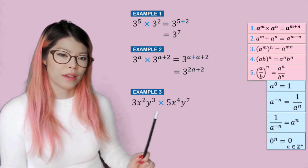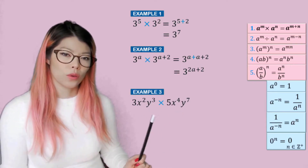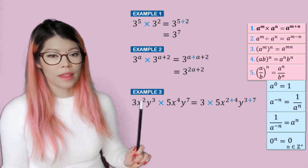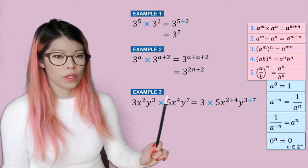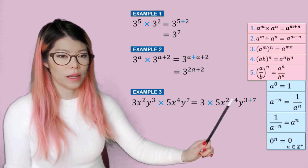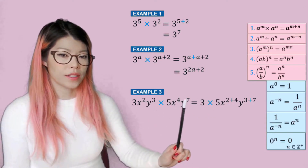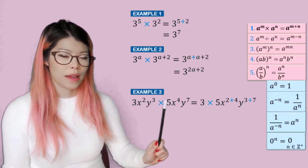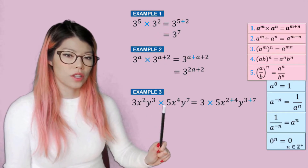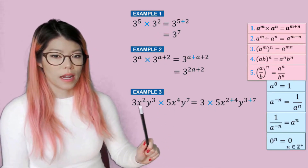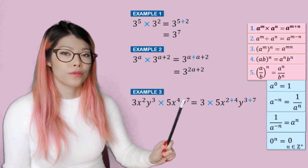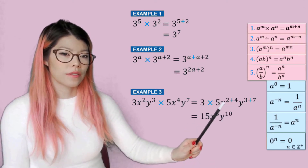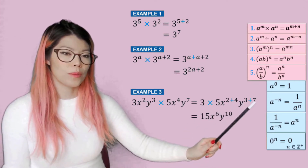Another example where we have bigger expressions: what do we do? We collect like terms. So firstly, let's put the numbers together — three times five. And then x to the power of two times x to the power of four means two plus four is our new power. And y to the three and y to the seven means three plus seven is our new power. Try to always collect them from smallest digit to largest, so three and five, and in alphabetical order. So three times five is 15, then two plus four is six, and three plus seven is 10.